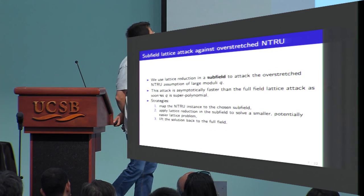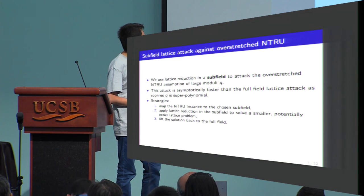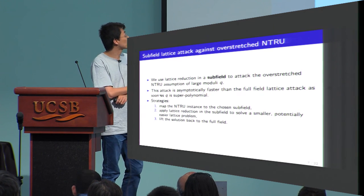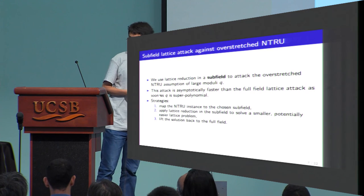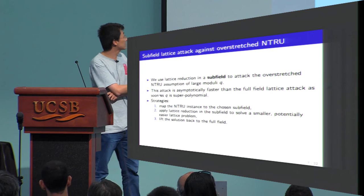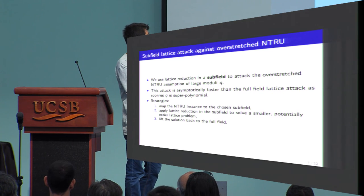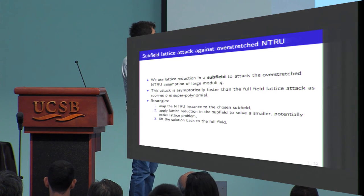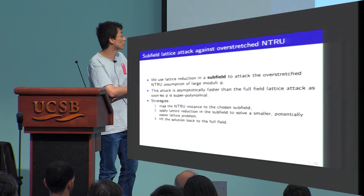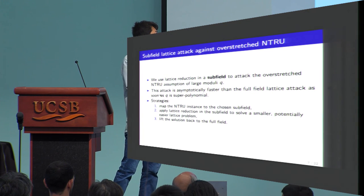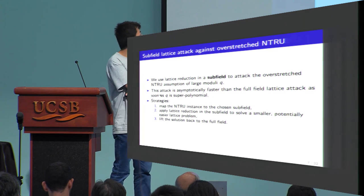In this talk we discuss a subfield lattice attack for this over-stretched NTRU assumption. This attack is asymptotically faster than the full field attack as soon as Q becomes super-polynomial — the larger the modulus, the more efficient our attack. Our strategy has three steps: first, we map the NTRU instance in the full field to some chosen subfield; second, we use lattice reduction in this subfield to recover some vectors hopefully useful to solve the original problem; since we work in a subfield of smaller dimension, this is easier; finally, we lift the solution back to the full field.